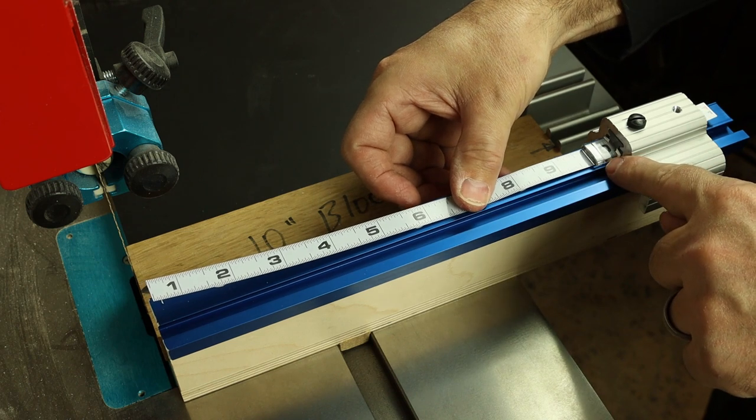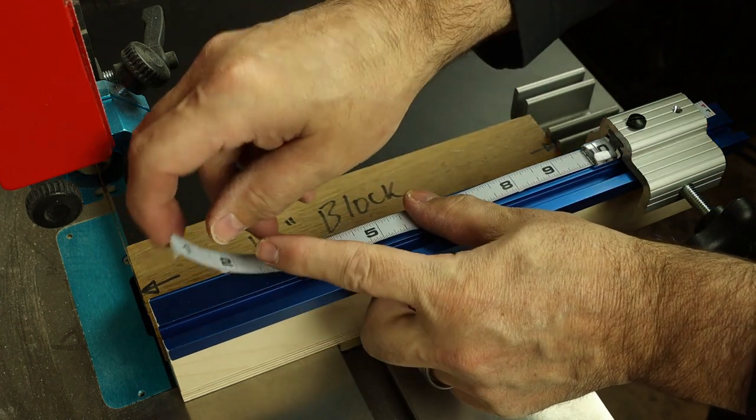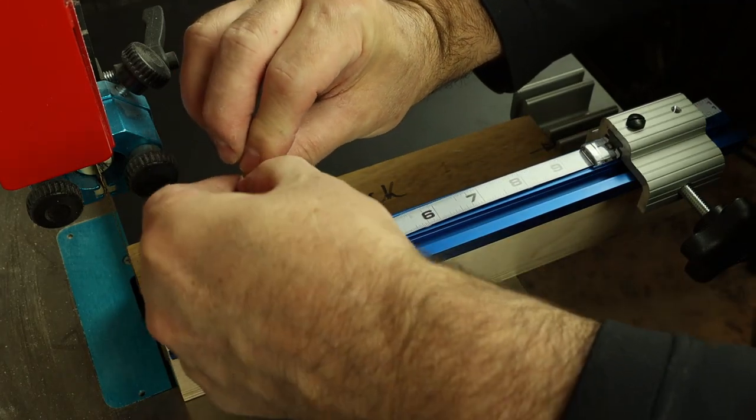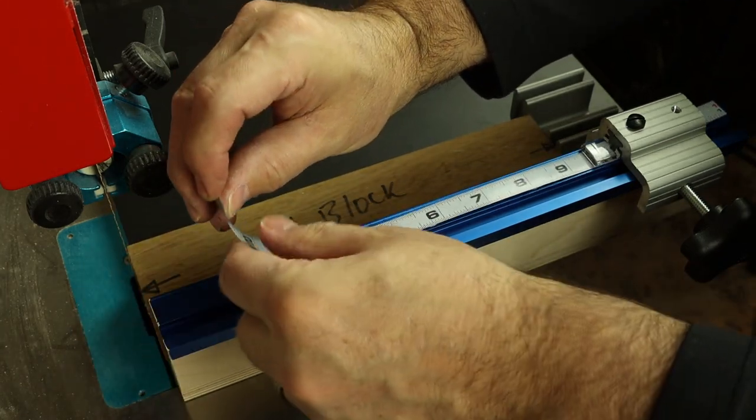Just slide your tape measure over until the cursor reads at the correct 10-inch mark and from there just peel back the adhesive backing and you can go ahead and set that in place.